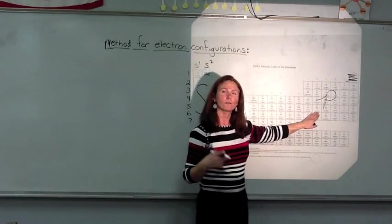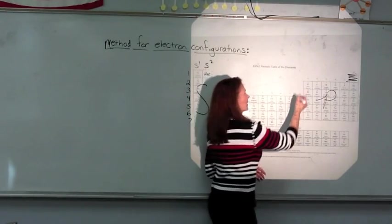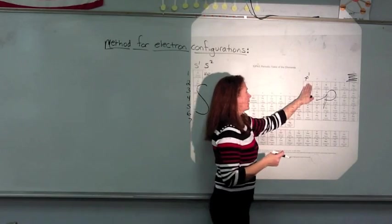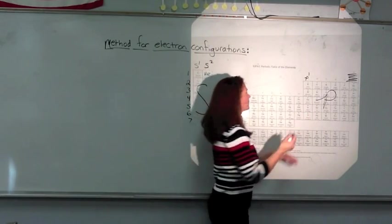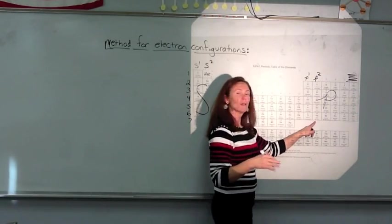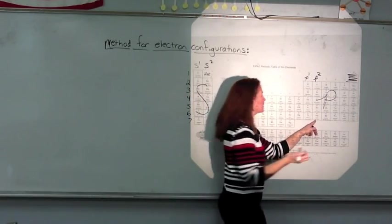All of these elements over here are filling their p sub level. Boron, aluminum, gallium, all of those have one electron in their outer p. All of these elements have two electrons in their outermost p sub level.